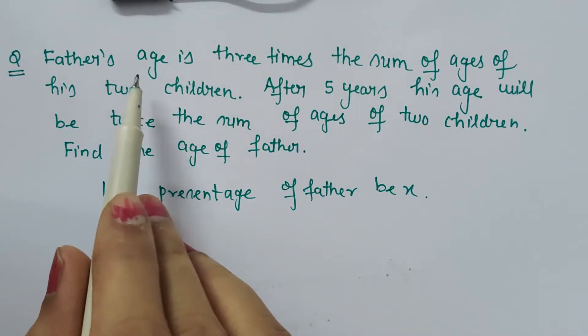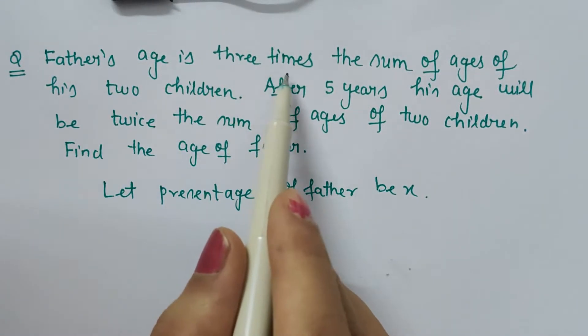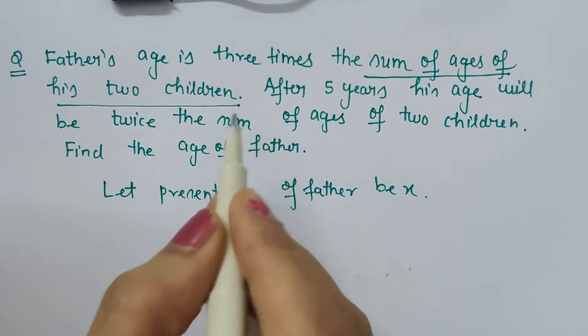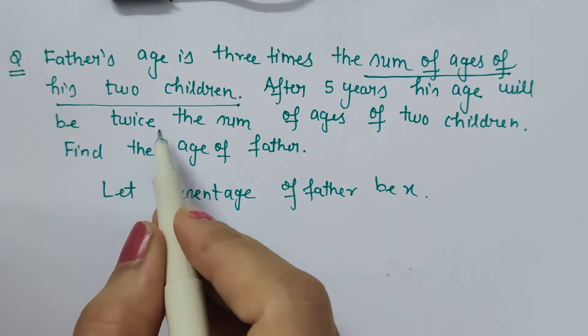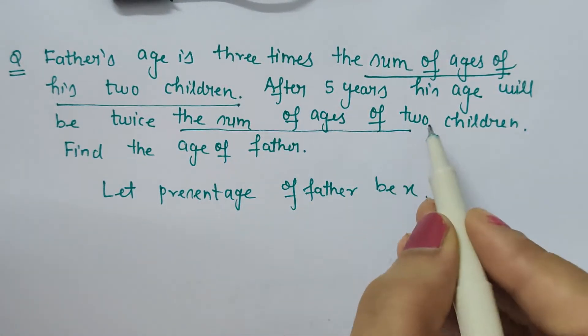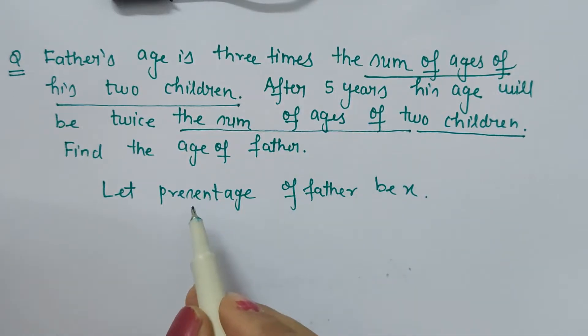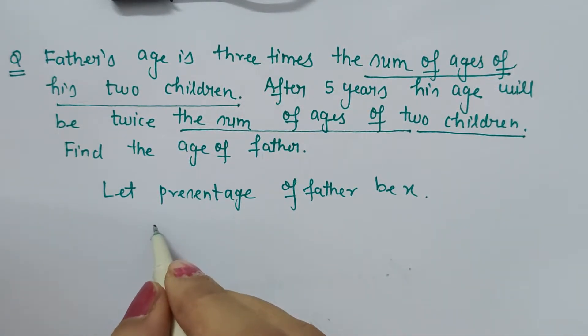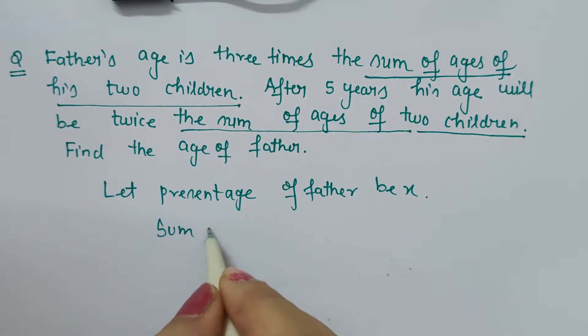What else is not known to us? When we read the question, we see that father's age is three times the sum of ages of his two children. After five years, his age will be twice the sum of ages of two children. Are we aware of this? No, we are not aware.